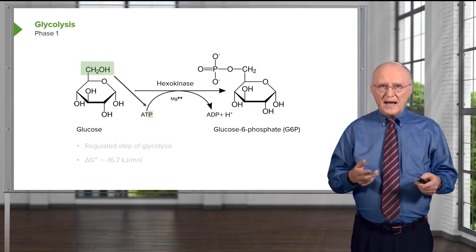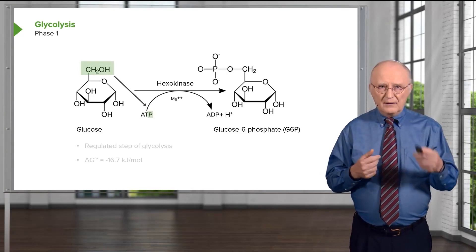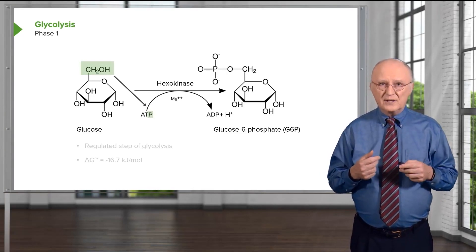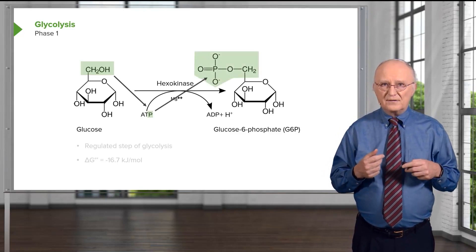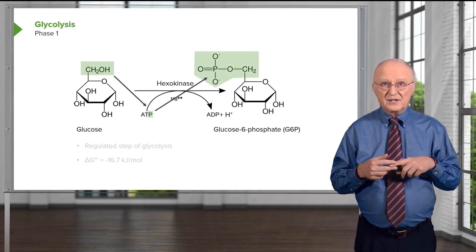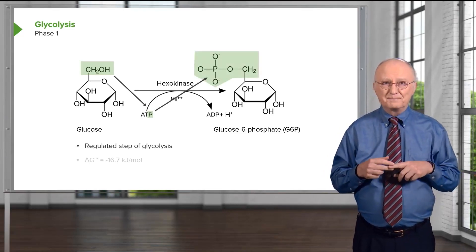This reaction involves carbon number 6 of glucose, which becomes attached to the phosphate — that is carbon number 6 shown in the glucose 6-phosphate.